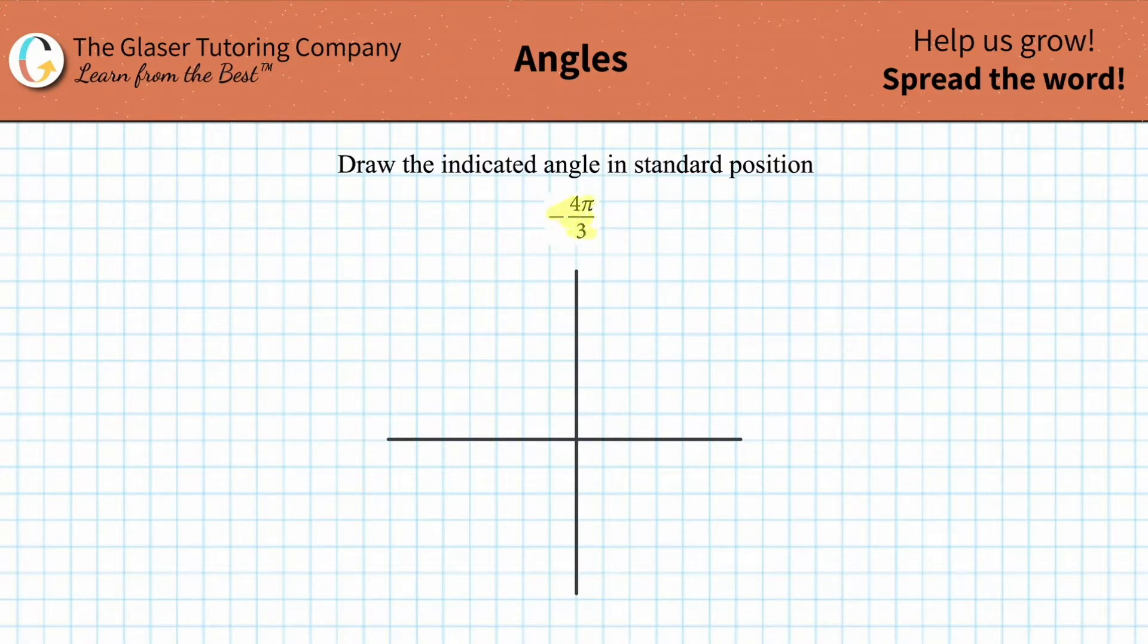So how do we draw a negative 4π over 3 in standard position? We're going to work now with, first step is basically going to be to draw a line to represent the initial side and the positive x-axis. Label that zero.